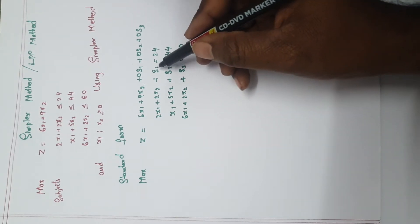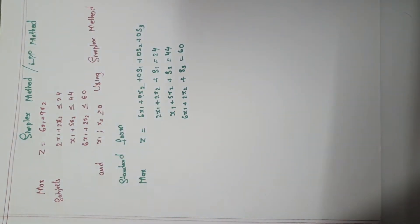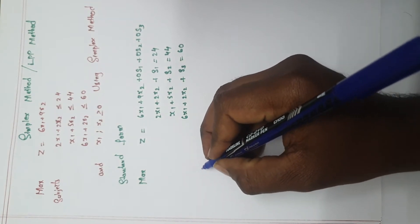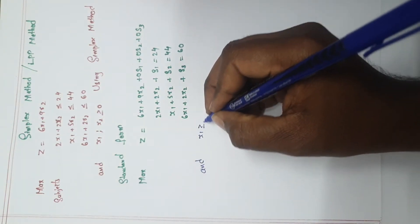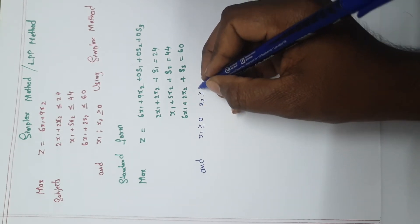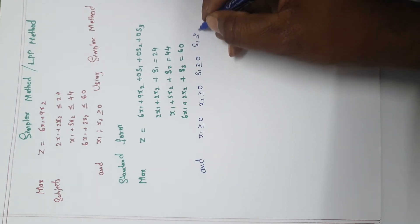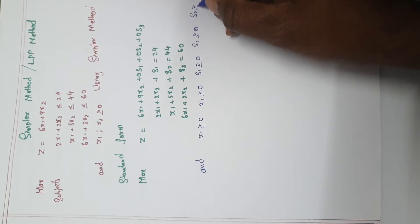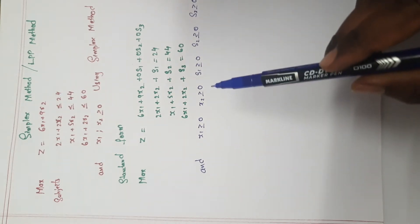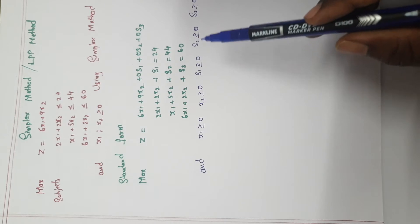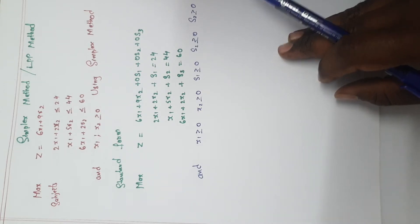Next, write the constraint equations with slack variables: 2x1 + 2x2 + s1 = 24, x1 + 5x2 + s2 = 44, and 6x1 + 2x2 + s3 = 60. Then write the non-negativity condition: x1, x2, s1, s2, s3 ≥ 0.